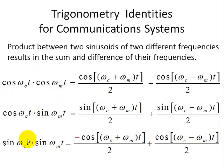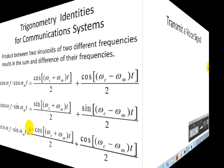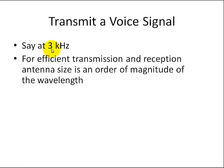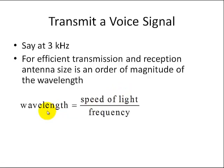But all of this can be proven very easily using Euler's identities. So let's show you that these previous trigonometric identities have a useful application. Say we want to transmit a voice signal at three kilohertz, and for efficient transmission and reception, the antenna size should be in the order of magnitude of the wavelength. We have the relationship from physics: the wavelength is equal to the speed of light divided by frequency.